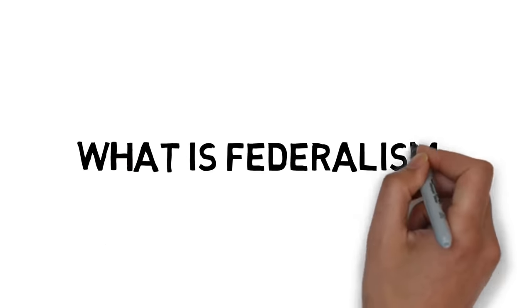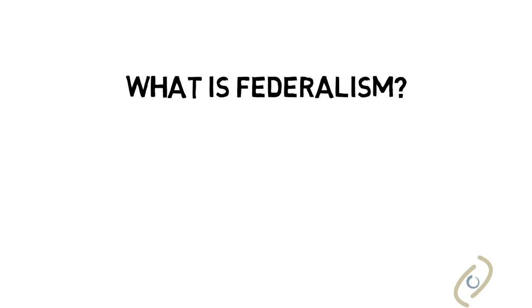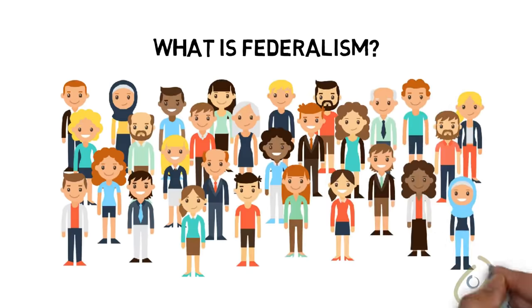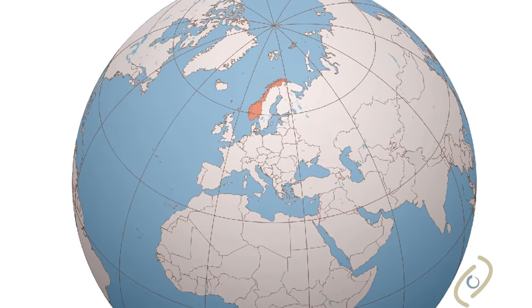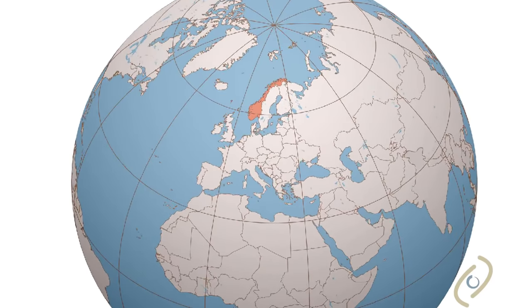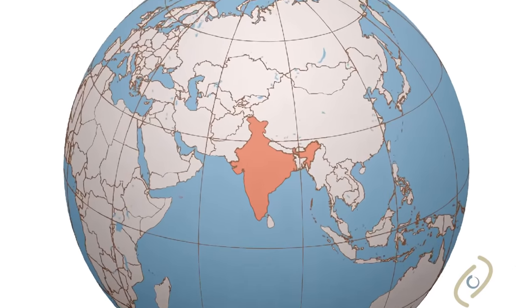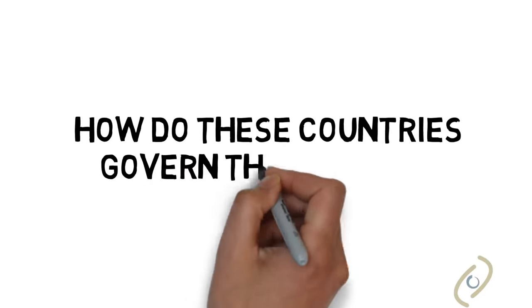What is federalism? Let's find out together. There are more than 7 billion people in the world living in over 190 countries. Some countries are small and homogenous, like Norway. Others are big and diverse, like India, with 22 official languages. How do these countries govern themselves?